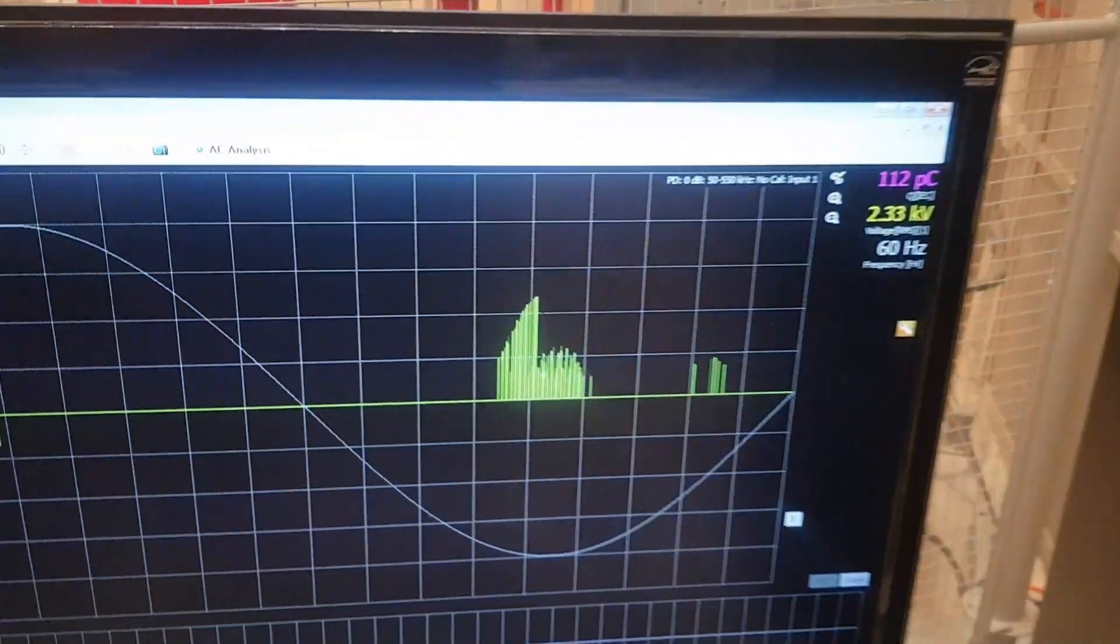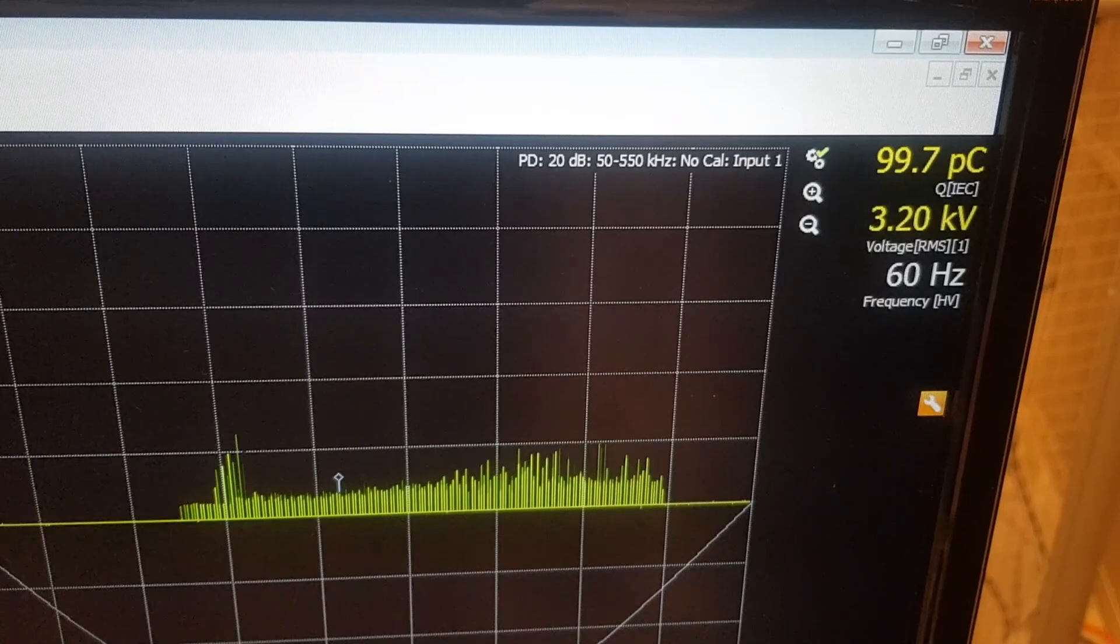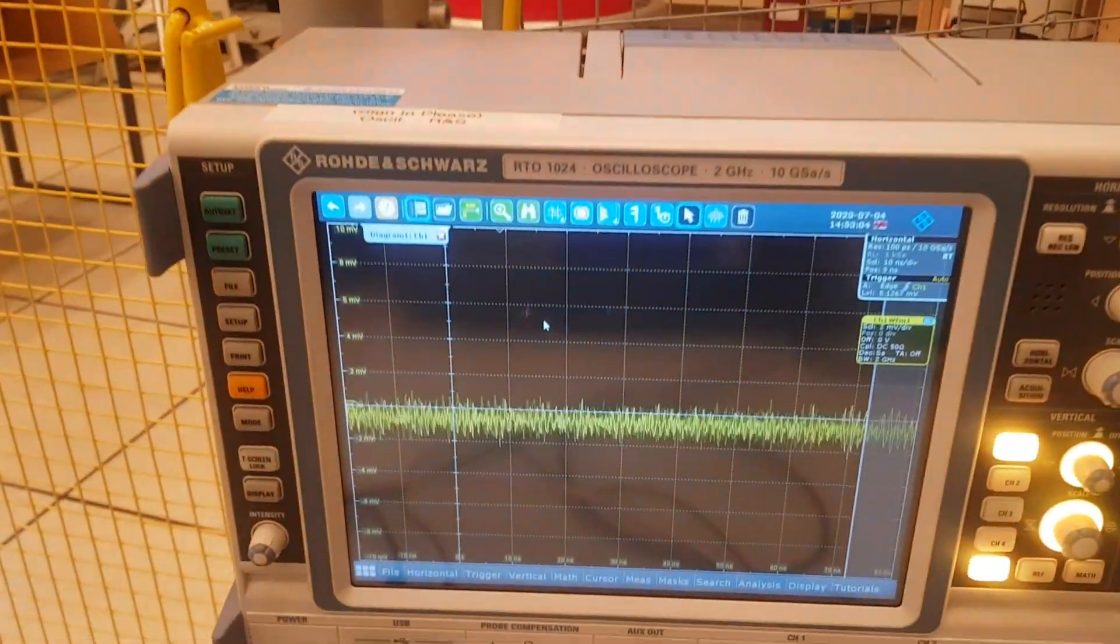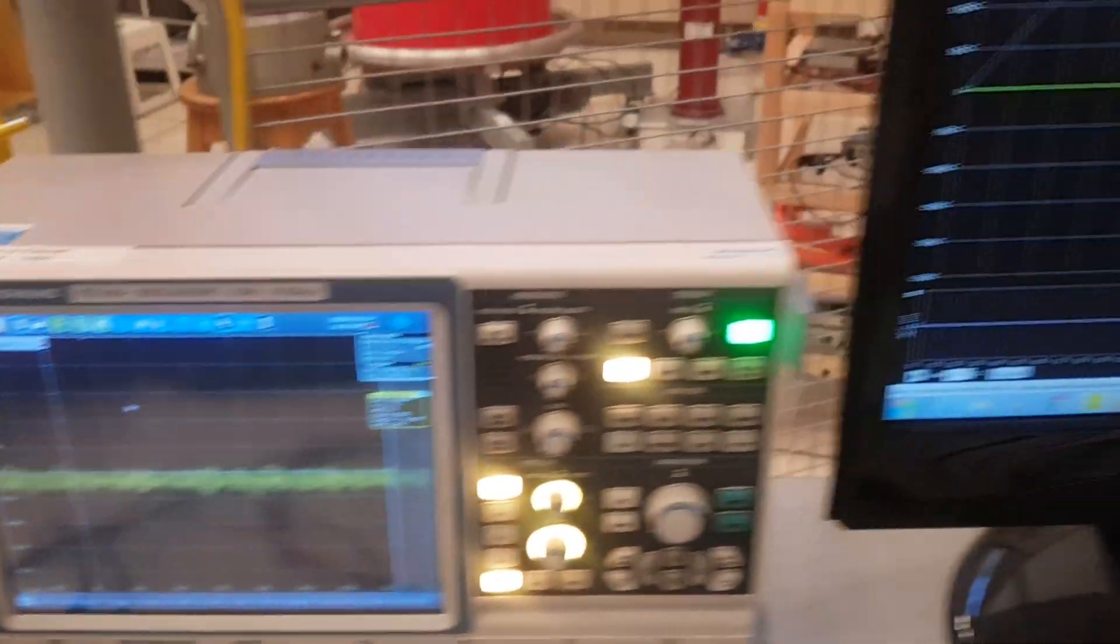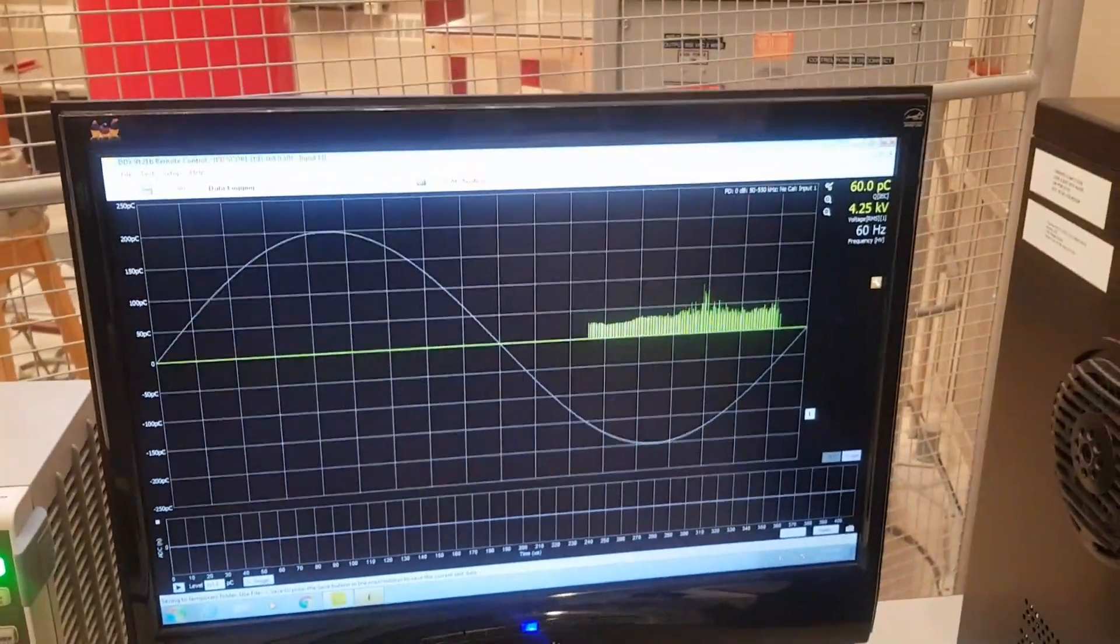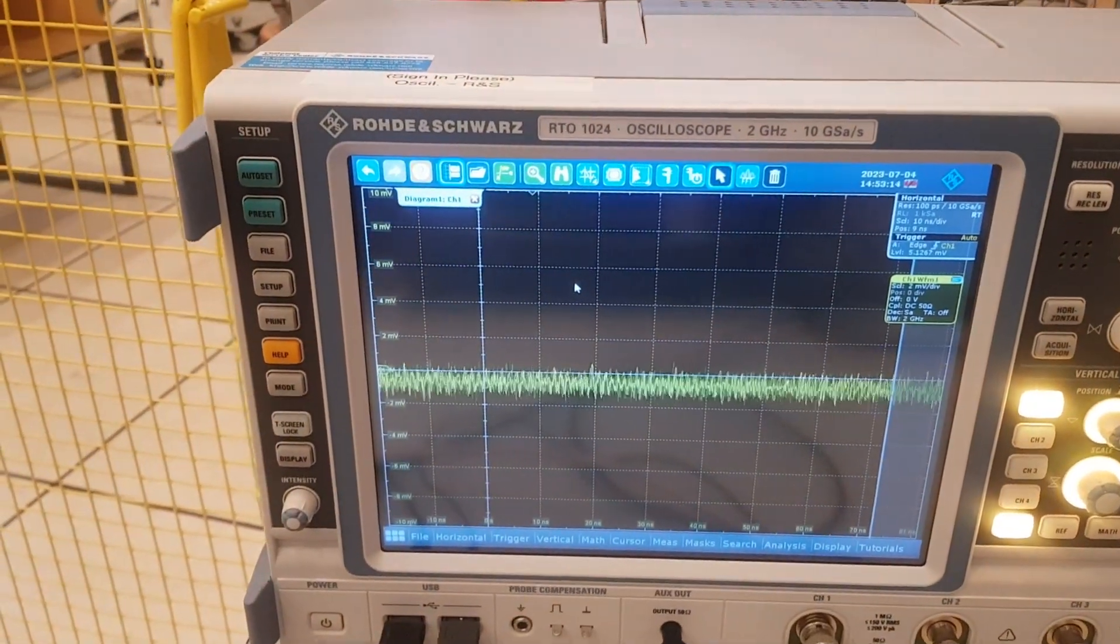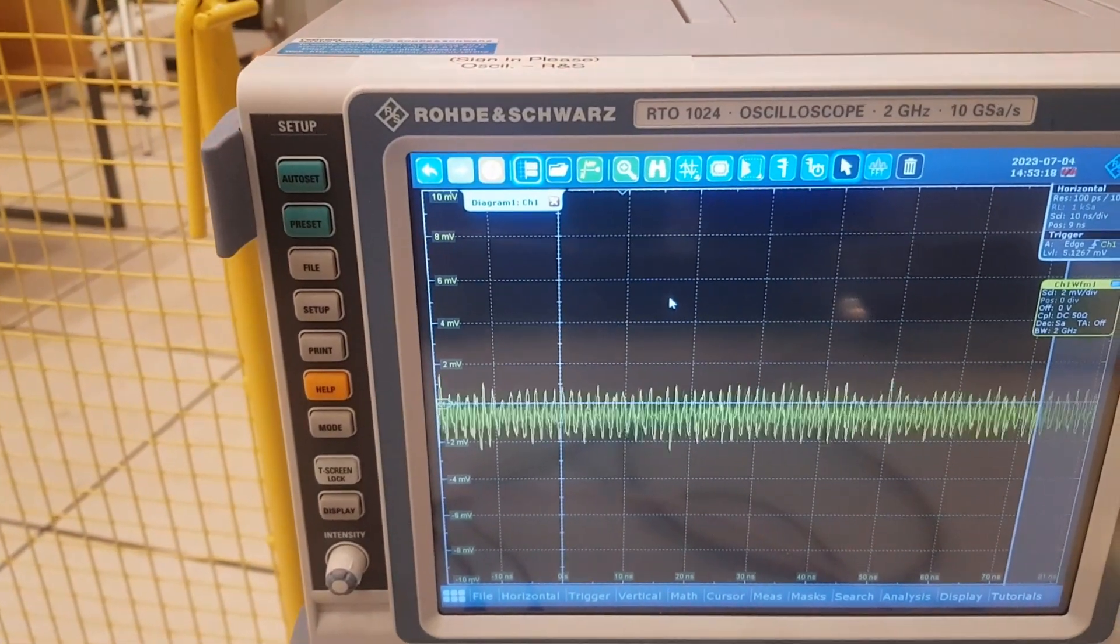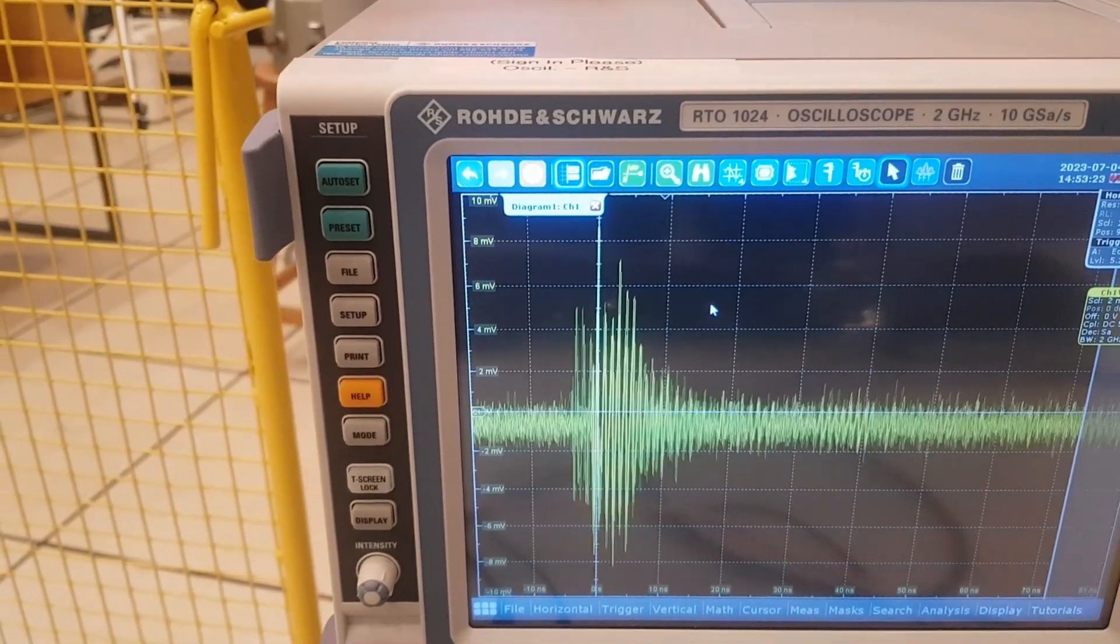Okay, so now we will start applying the voltage. And you can see here because of the sharp point, we have the partial discharge start to be detected at around three kilovolt. Now when you look here to the antenna, it still can't detect anything. What we'll do now, we'll start increasing the voltage until you start to see the pulses here. So the moment we start to see the pulses on the oscilloscope coming from the RF antenna, we will see at what voltage level it starts to detect that.